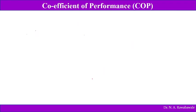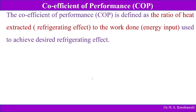The coefficient of performance: generally for measuring the efficiency of any device, we find efficiency as the ratio of output to input. Here, we want to find the performance of a refrigeration system, and it has got a special name — the coefficient of performance. The coefficient of performance is defined as the ratio of heat extracted (refrigerating effect) to the work done (energy input) used to achieve the desired refrigerating effect.